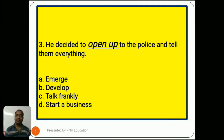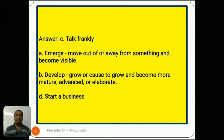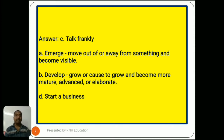Question number 3: 'He decided to open up to the police and tell them everything.' Options are A) emerge, B) develop, C) talk frankly, D) start a business. The answer is C) talk frankly. Option A, emerge, means move out of or away from something and become visible. Option B, develop, means grow or cause to grow and become more mature, advanced, and elaborate. Option D, start a business, is self-explanatory. So the right answer is C, talk frankly.